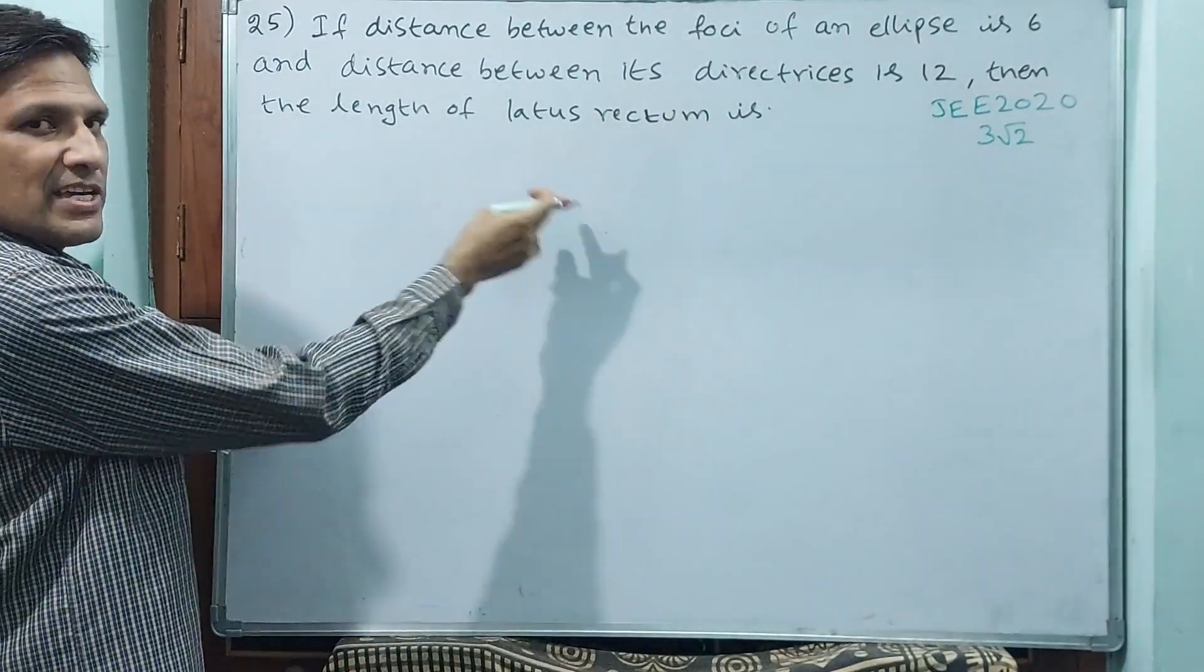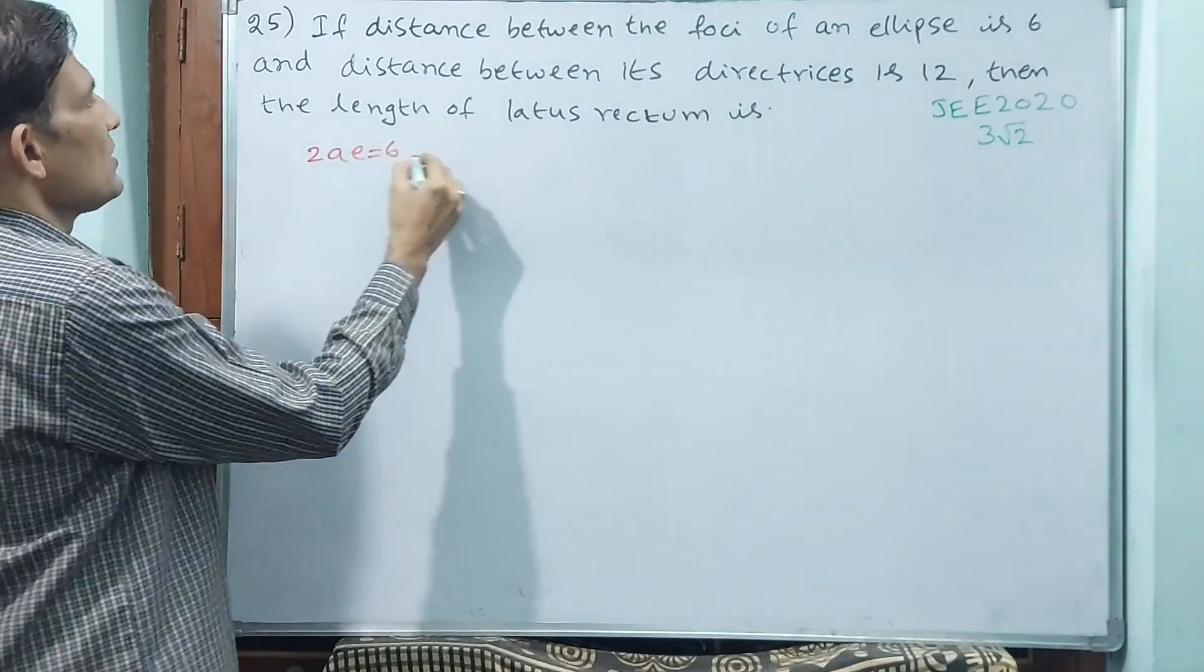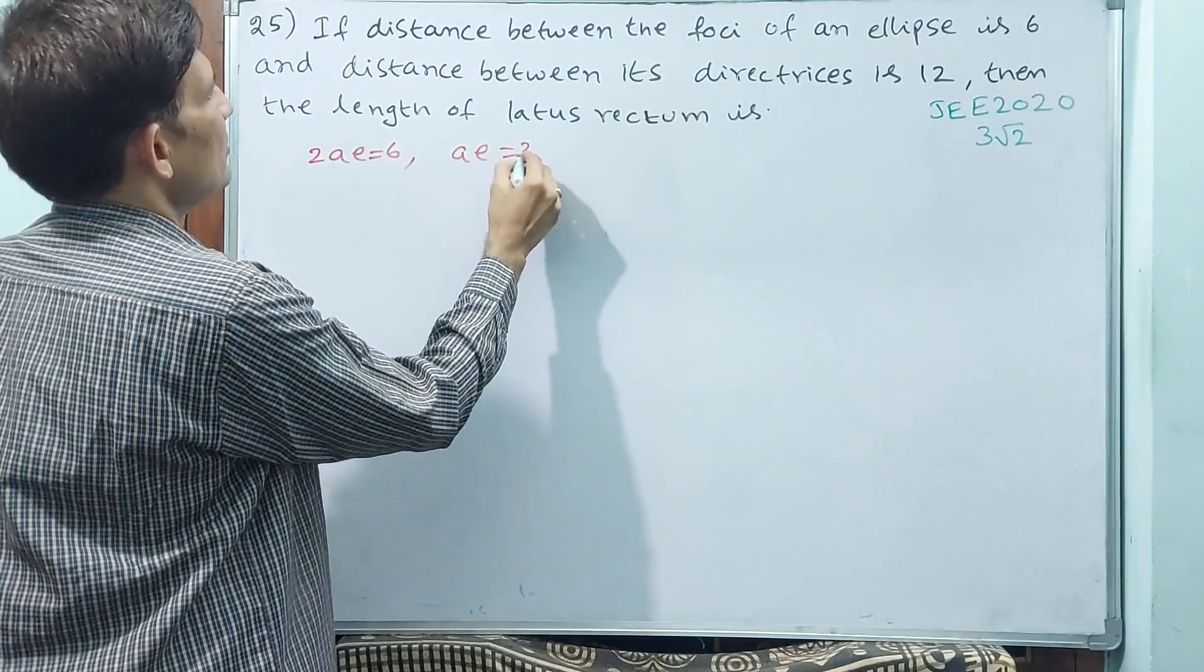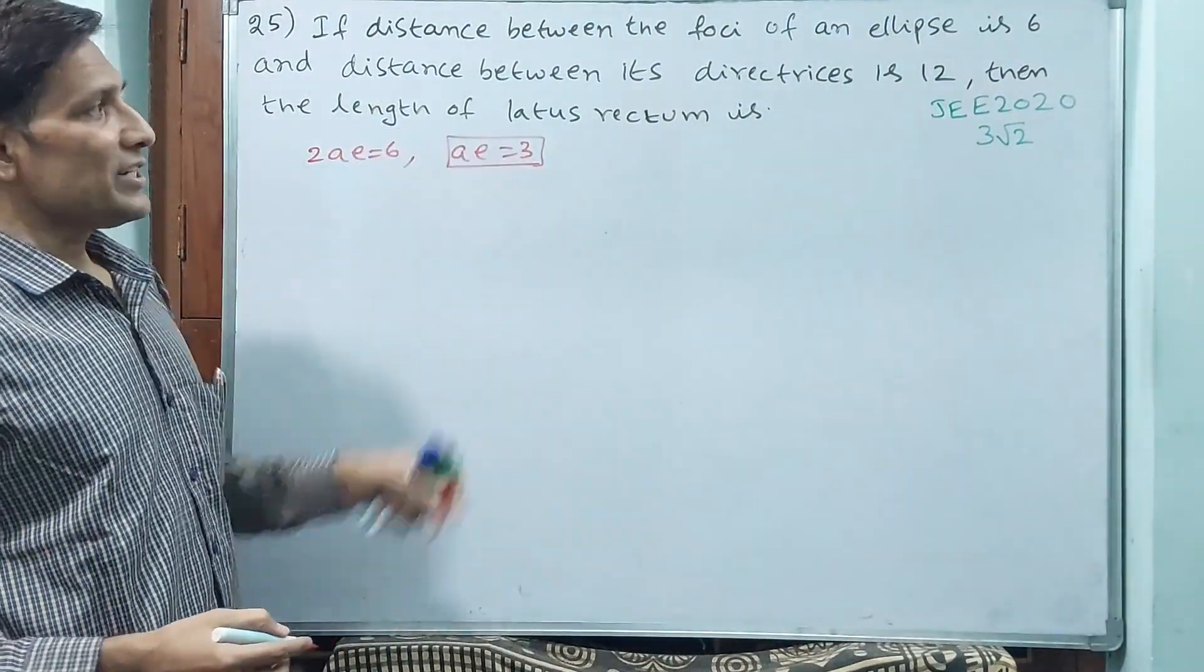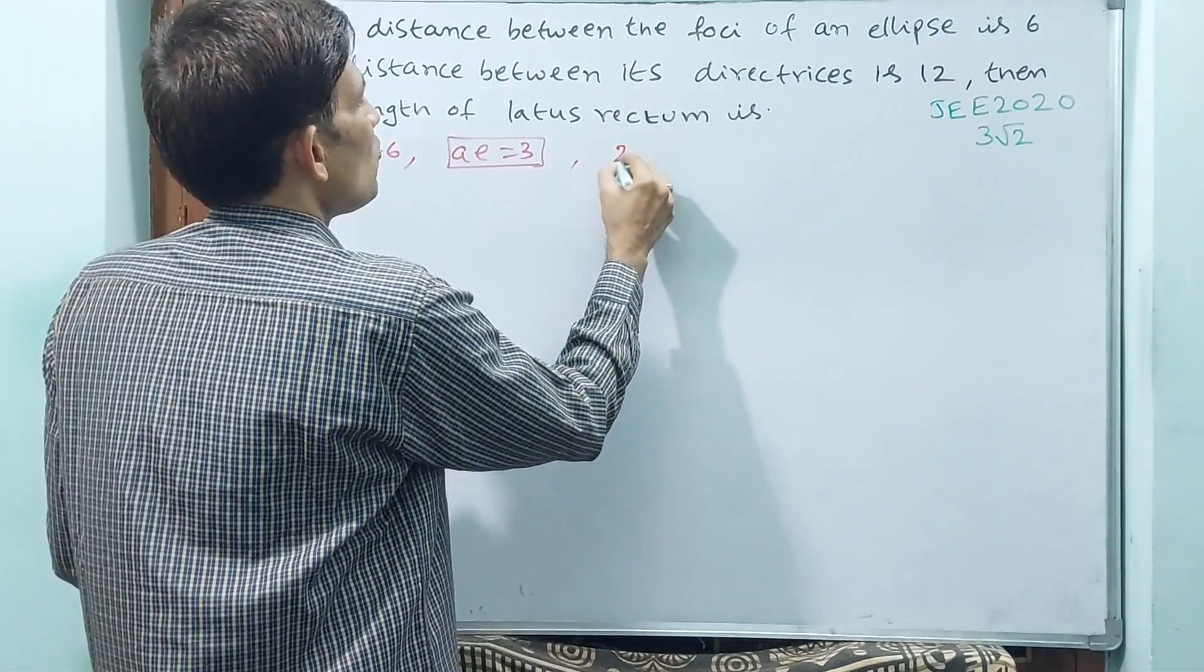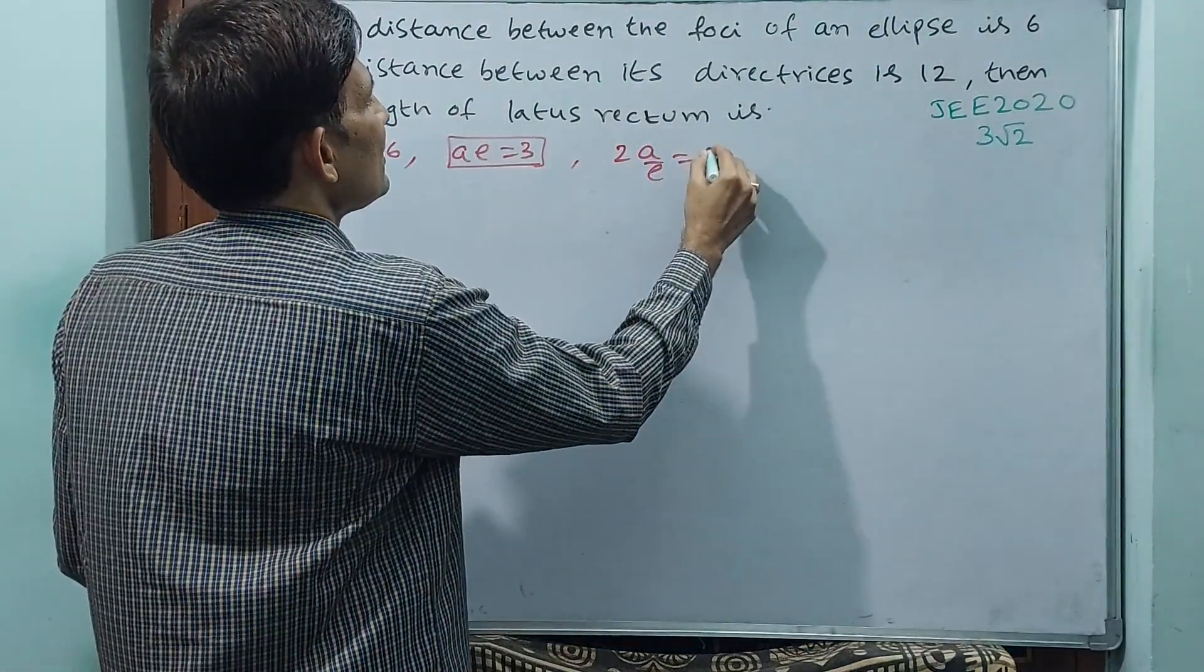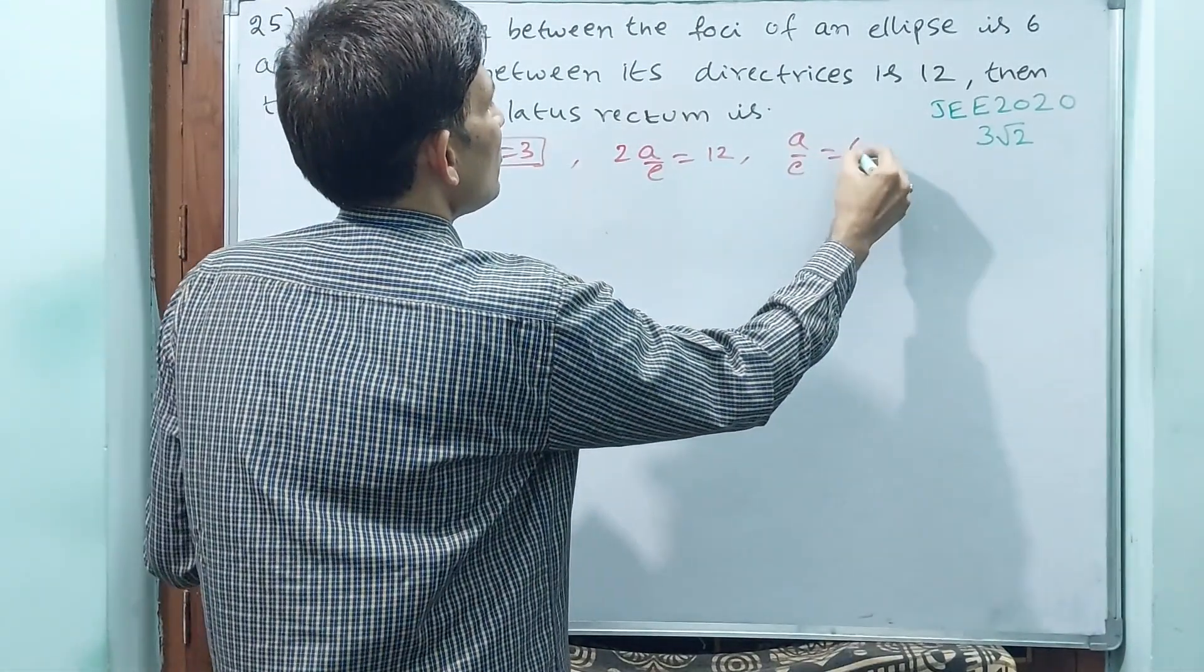Distance between the foci means 2AE. 2AE is equal to 6, or AE is equal to 3. This is one. Another one, distance between the directrices means 2A/E. This is equal to 12, or A/E is equal to 6.